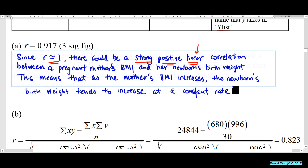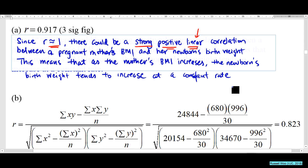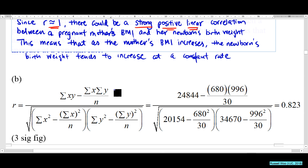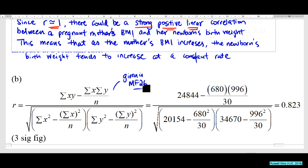Now let's look at example 2b. The question gives us all the summations, so you just substitute into the formula. This is given in MF26 — you retrieve the formula, plug in all the values, and you can calculate r = 0.823. Not difficult.